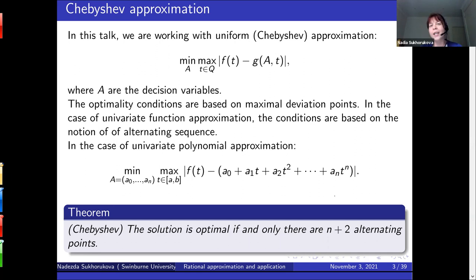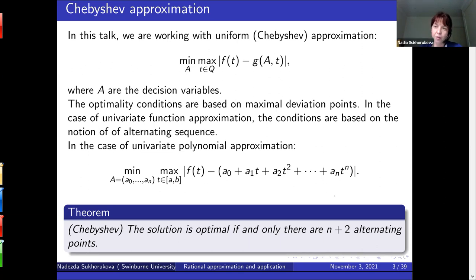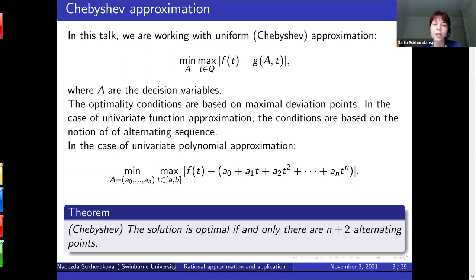In uniform approximation there will be something to do with maximal deviation and the so-called alternating points. In the case of polynomials it is easy — in theory — to verify necessary and sufficient optimality conditions. You need to check the points of maximal deviation of your function and the approximation. If you have n+2 alternating points, where n is the degree of the polynomial, then your approximation is optimal.